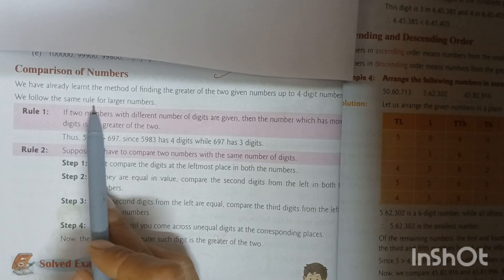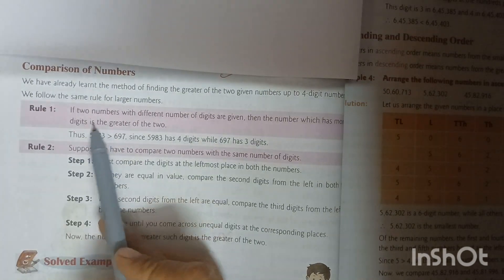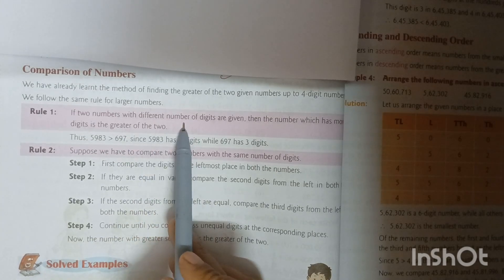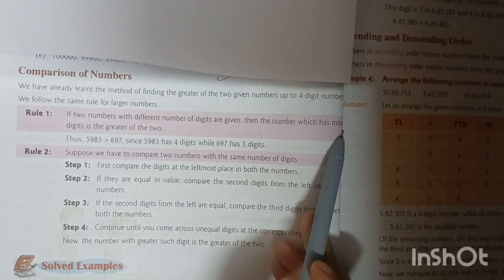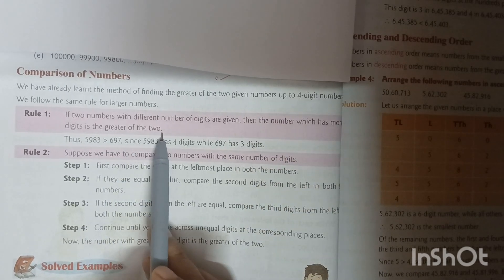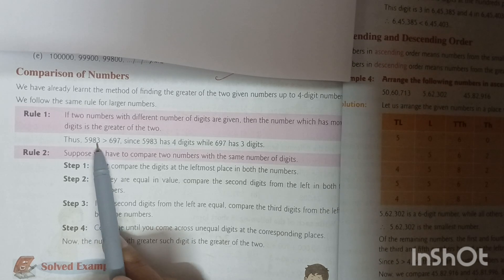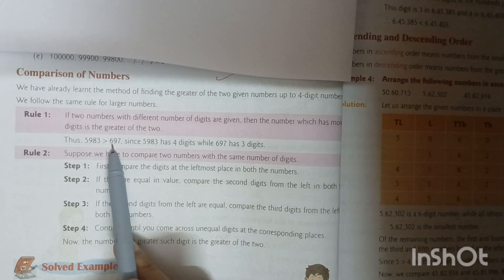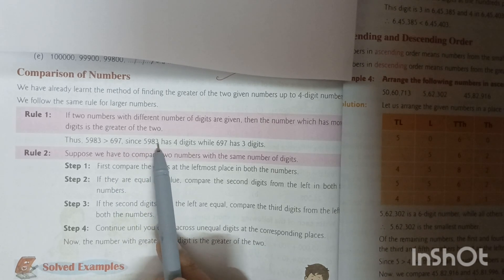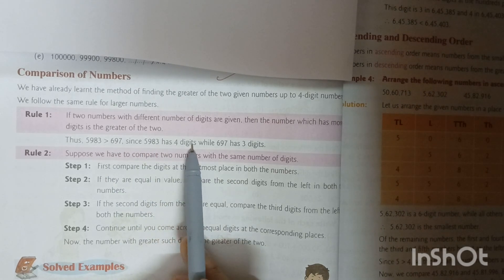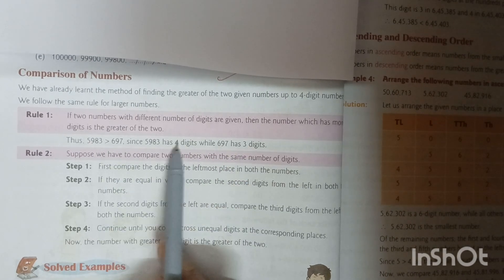We follow the same rule for larger numbers. Rule 1: If two numbers with different numbers of digits are given, then the number which has more digits is greater of the two. Thus, 5,983 is greater than 697, since 5,983 has 4 digits while 697 has 3 digits.